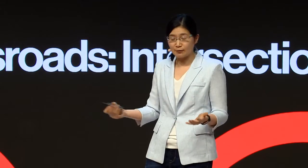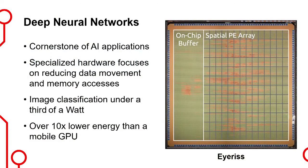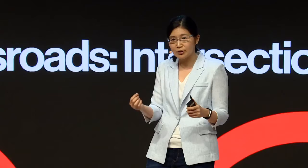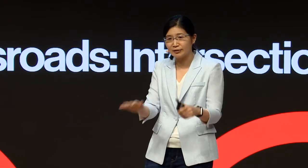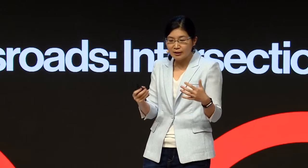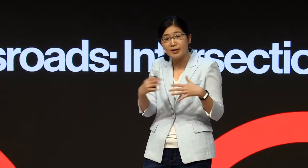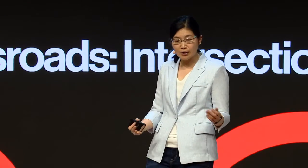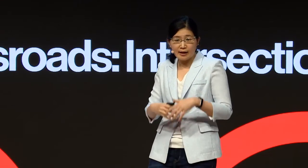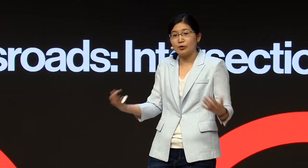The first project is building efficient hardware for deep neural networks, which is used for a wide range of AI applications and delivers state-of-the-art accuracy. In developing specialized hardware, we focused on reducing the cost of data movement. It turns out it's not really the computation — the multiplies or adds — that's expensive, but how you move data from memory to the compute engines. We designed specialized hardware named Iris that minimizes this data movement, allowing us to do image classification in under a third of a watt — an order of magnitude lower energy consumption compared to existing mobile GPUs.